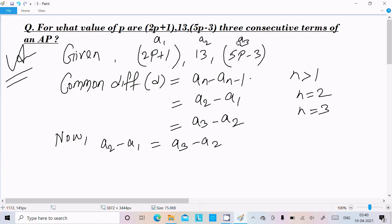Now put here a2, so a2 is 13, a1 right here is 2p plus 1, a3 is 5p minus 3, and here a2 is 13.